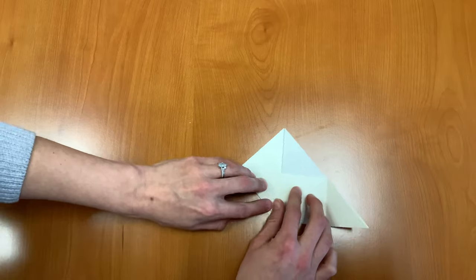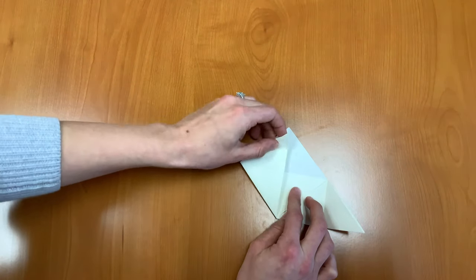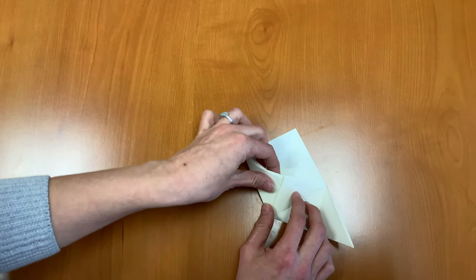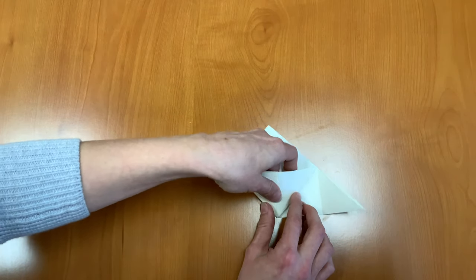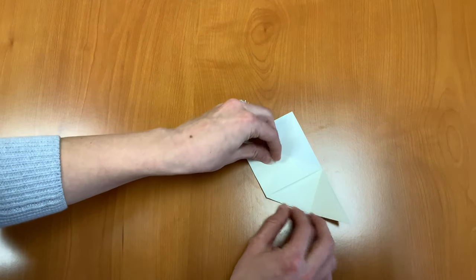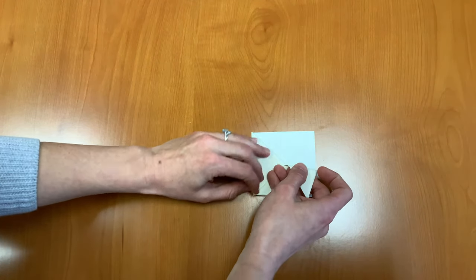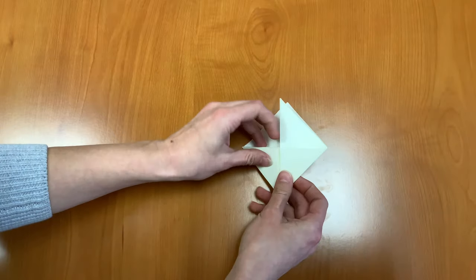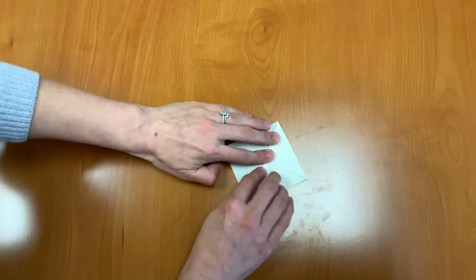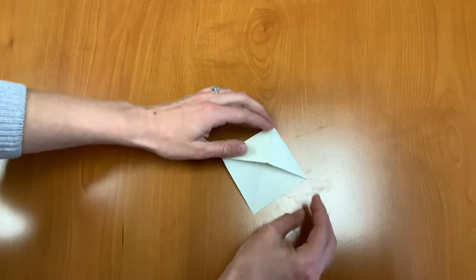Now we're going to fold the left corner all the way up to the top and just tuck it in right there. Same thing with the right corner, we're going to fold it all the way to the top and tuck it in. And now you have your bookmark.